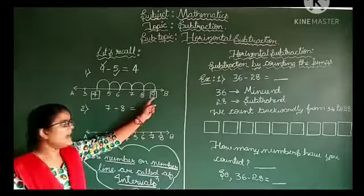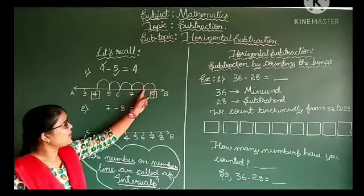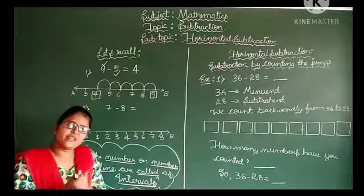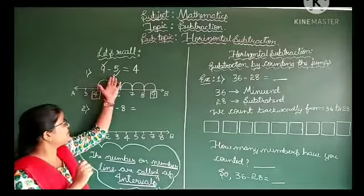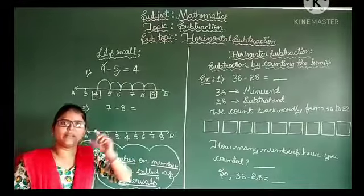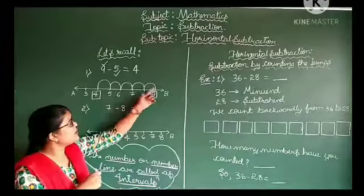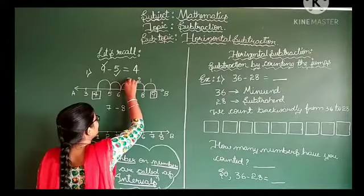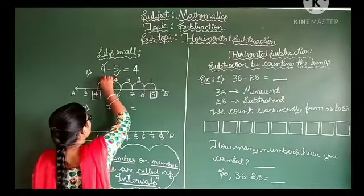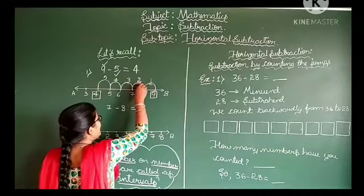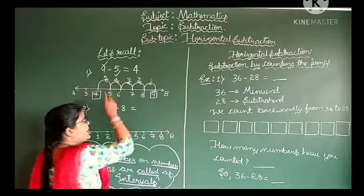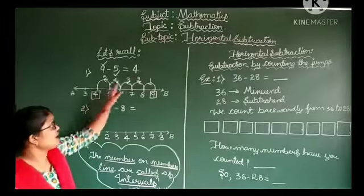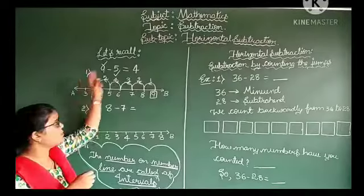First, we have to mark the bigger number and then move backward — to the left of the number line — 5 steps. Why 5 steps? Because 5 is the smaller number. So we jump 5 steps backwardly: 1, 2, 3, 4, 5 — to the left of the number line. Then we reach a number. That number is called the difference. That is all about our first question.